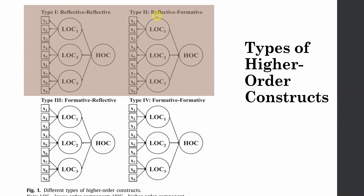For reflective-formative, at the first level they are reflective — the arrows point towards the indicators. At the higher level, they are formative because these lower-order constructs form the higher-order construct, in this case internal marketing. Vision, development, and rewards are each reflective at the lower level, and these three constructs together form the higher-order construct of internal marketing. If you remove any one of them, there is no concept of internal marketing. So we have two constructs: internal service quality as reflective-reflective — reflective at the first order and reflective at the second level — and internal marketing as reflective-formative, meaning reflective at the lower level and formative at the higher level with arrows pointing towards the construct.